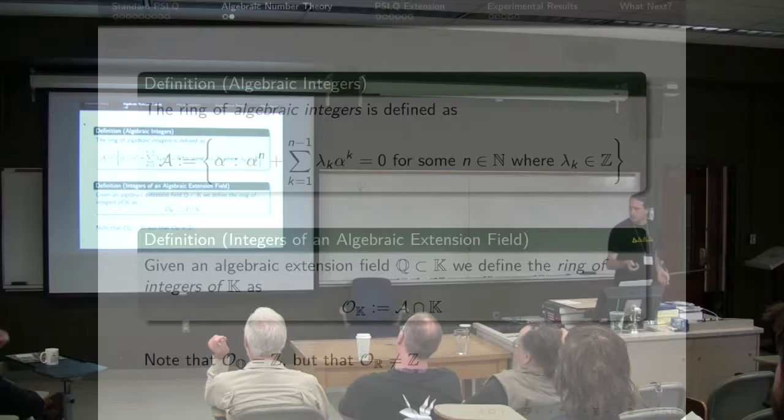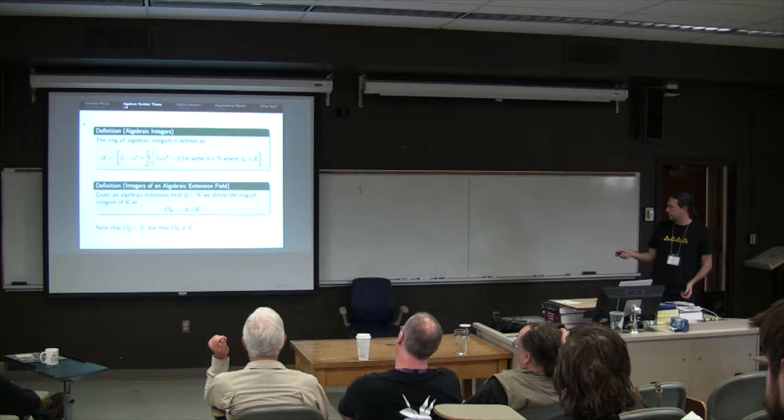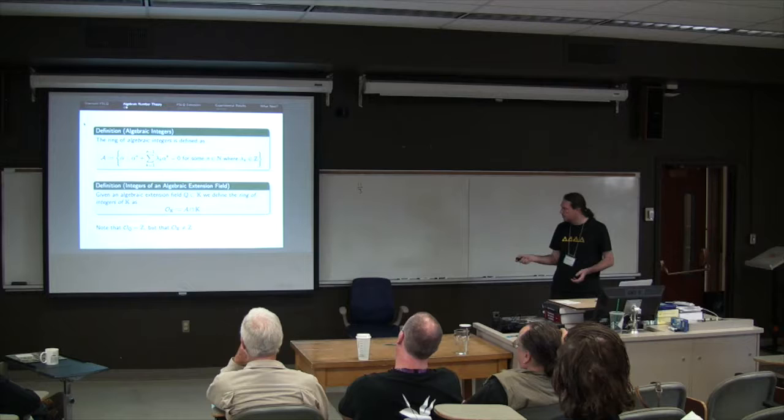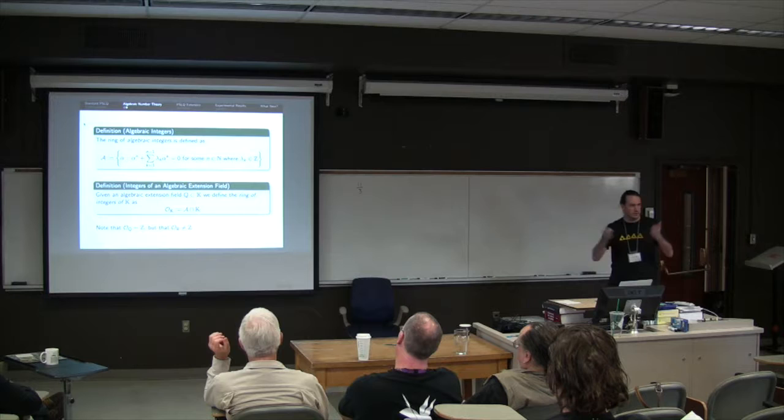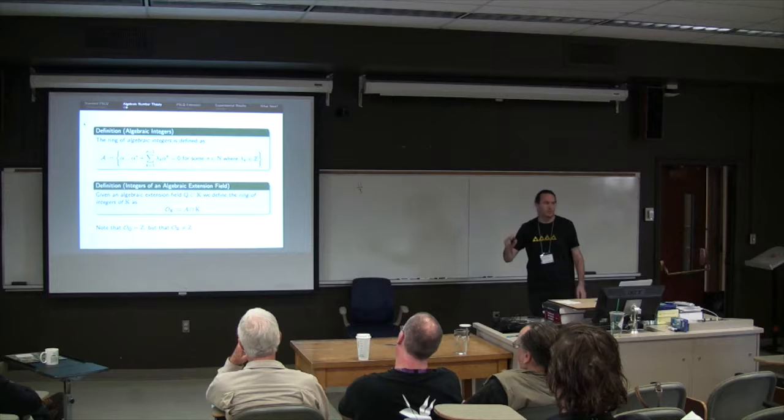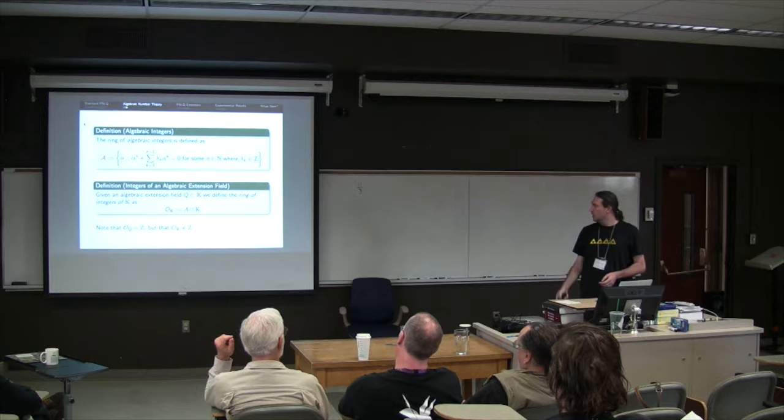So in particular, it's not immediately clear from this definition that this is in fact a ring, but it is. It's not particularly necessary for what I'm doing I don't think. But in particular, if we take the integers of the rationals we get the regular integers we know, but if we take the integers of the reals we don't. We get a weird set. Where root 2 is in this set, for example, as the root of x squared minus 2. So that's all the algebraic number theory I'm covering.